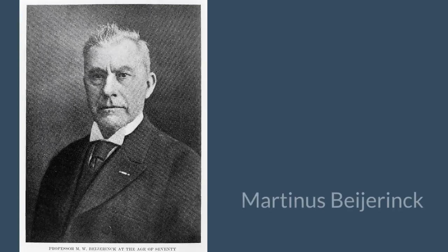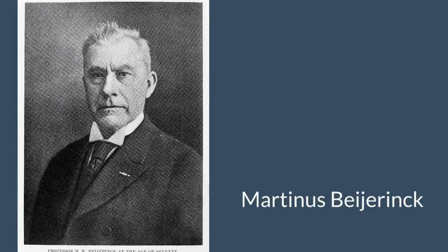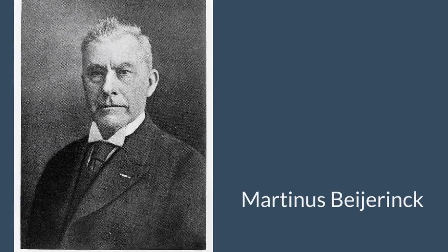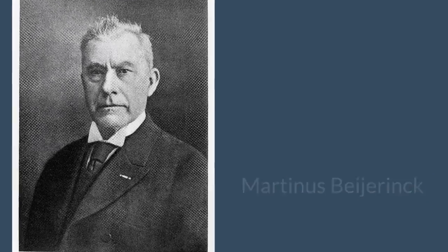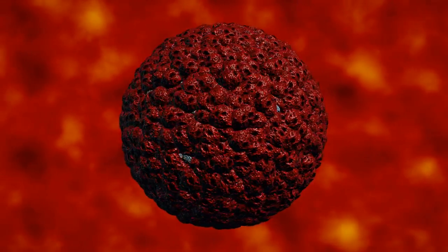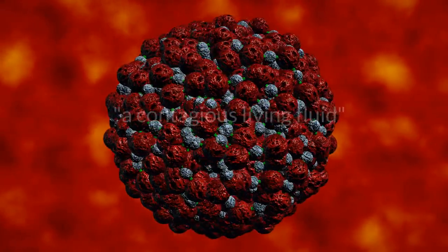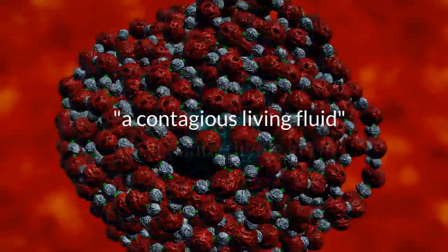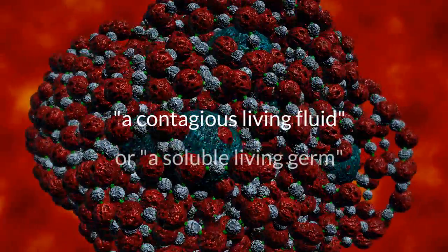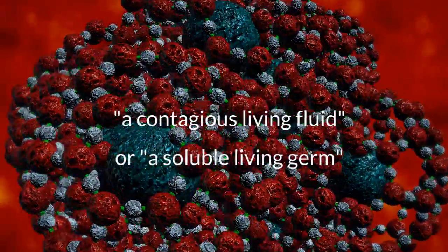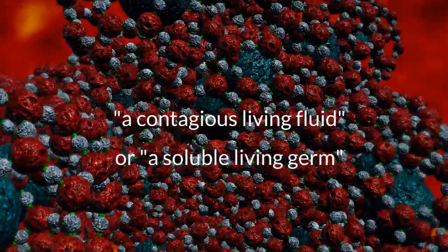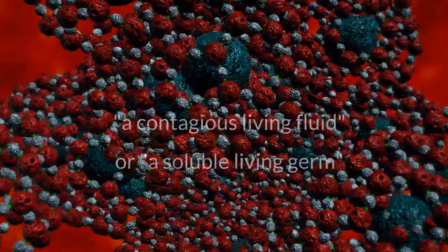In 1899, Dutch microbiologist Martinus Beijerinck observed that the agent only multiplies when in dividing cells. He called it a contagious living fluid, or a soluble living germ, because he could not find any germ-like particles.